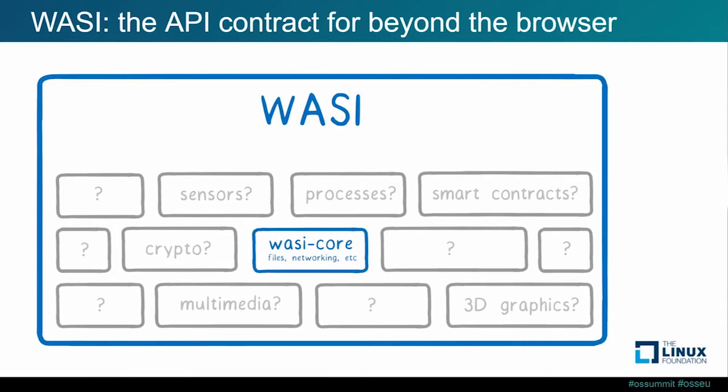You can think of WASI as an API contract between the WebAssembly runtime and the environment you're trying to work in. There's a WASI core with interfaces defined for things like file system and networking, and the community is expanding upon it — blockchain folks are proposing smart contracts, VR, 3D graphics, and more. This is an area under active development and an opportunity to come in and be part of the story.